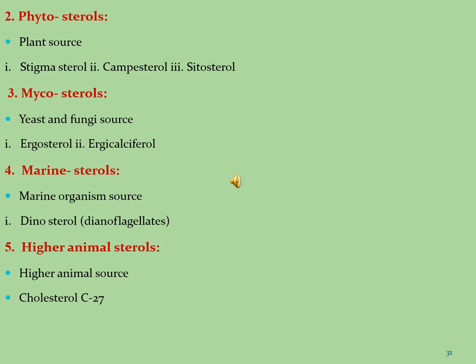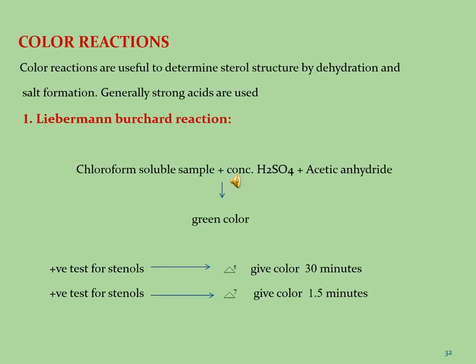Higher animal sterols are isolated from higher animals, with the common example being cholesterol (C27). Identification tests and color reactions are useful to determine steroid structures by dehydration and salt formation. Generally, strong acids are used.